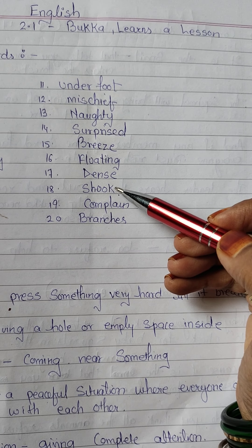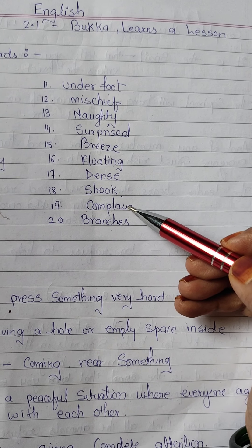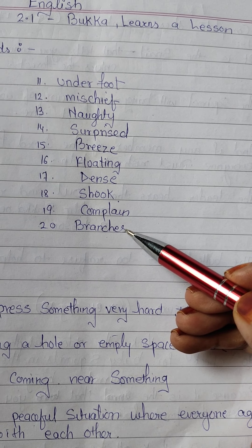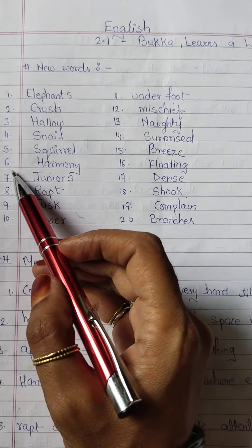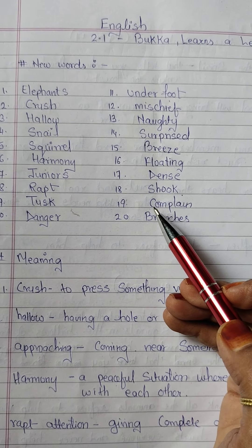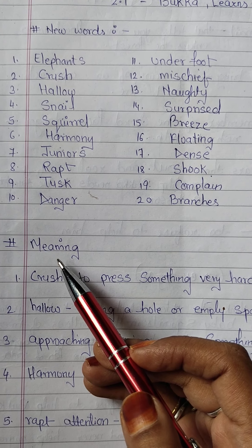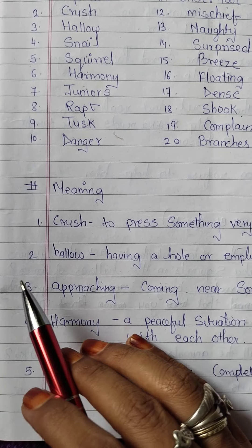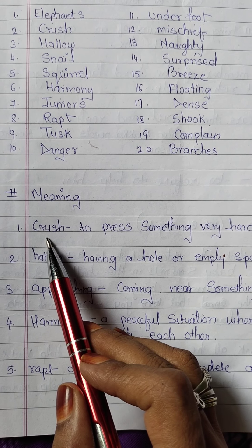Sixteenth floating, seventeenth dance, eighteenth shook, nineteenth complain, and twentieth branches. So these are twenty new words — difficult or hard words which are there in the lesson. Now moving to the meaning of the words given in the lesson.